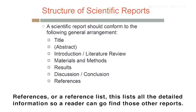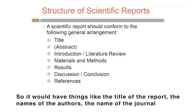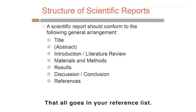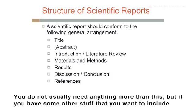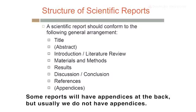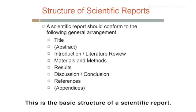The reference list lists all the detailed information so a reader can go find those other reports — things like the title of the report, the names of the authors, the name of the journal it was published in, and what page numbers it was on. Now, if you have some other material that doesn't fit in any of the above sections, you put it in what's called an appendix — the plural is appendices. Some reports will have appendices at the back, but usually we don't.